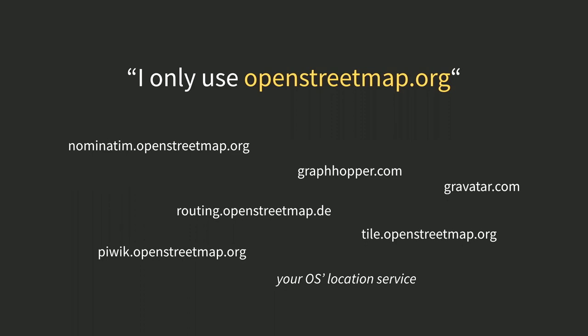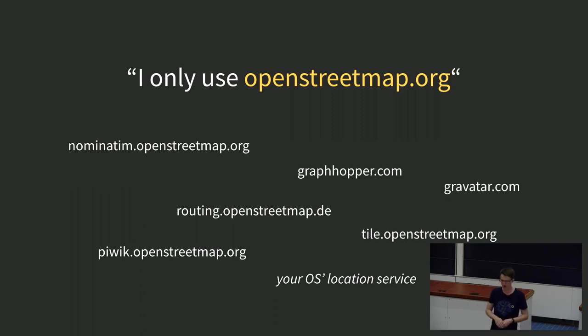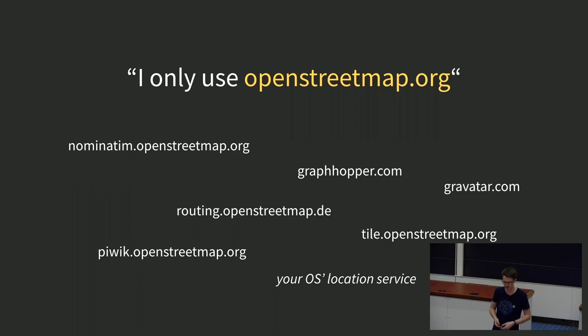For example, the website itself, Nominatim, and the analytics tool — now called MemMoto, but the domain is Piwik — those are hosted by OSMF. The routing is hosted by Fossgis, the German local chapter of OpenStreetMap. But if you use the non-OSRM routing, your request will go to graphhopper.com, which is a for-profit company. And if you look at user accounts on the OSM website, you will use the service called Gravatar, which is a US-based company with no involvement in OSM at all.